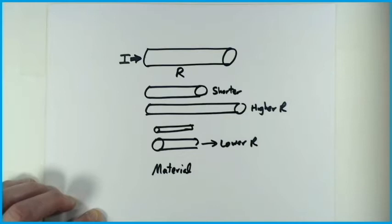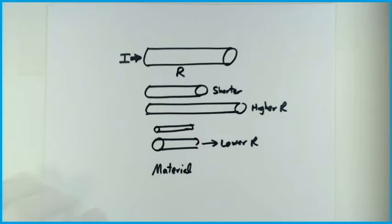And finally, it clearly depends on the material itself. Things like gold, copper, and silver are metals that are very easy to send electrons through — that's why we wire our homes with copper. On the other hand, we'd never wire our homes with glass or plaster; those are insulators.